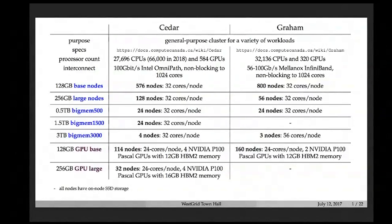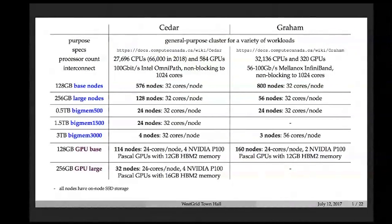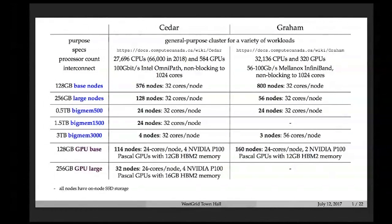When you submit a job, you don't have to explicitly specify which type of node you want — depending primarily on how much memory you're requesting, the job will go to the right type of node. In addition to regular CPU nodes, we also have GPU nodes in two types: 128 gigabytes and 256 gigabytes of memory.